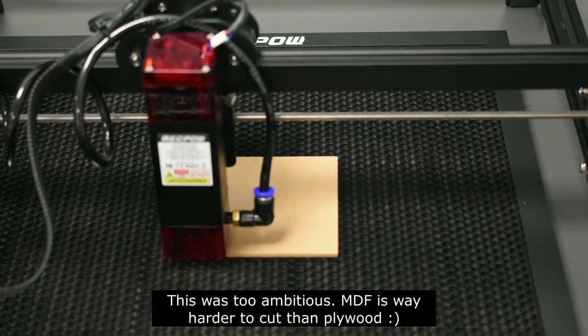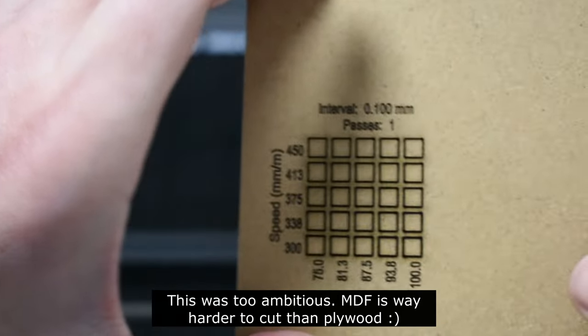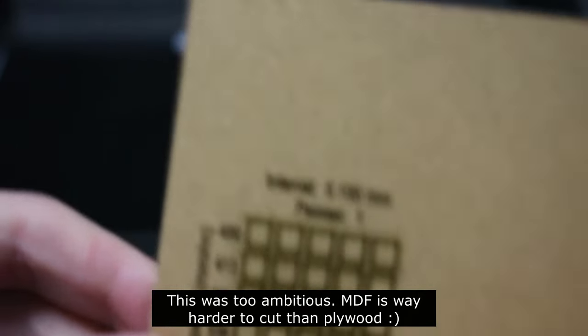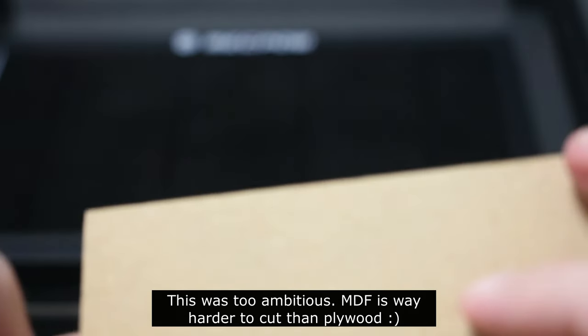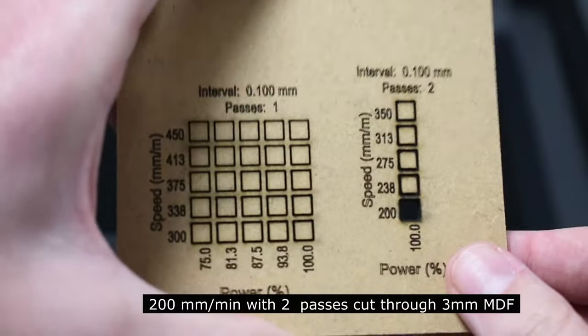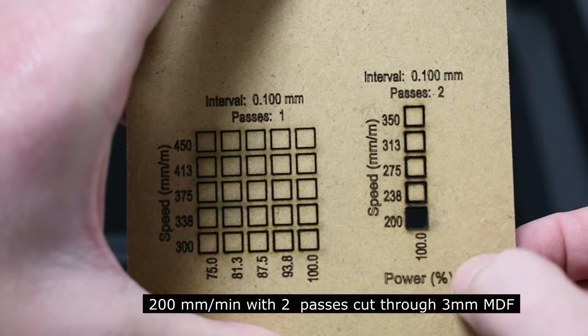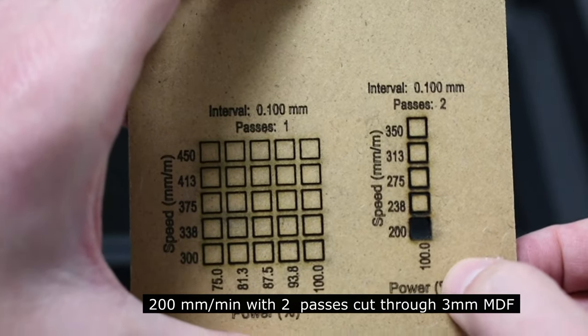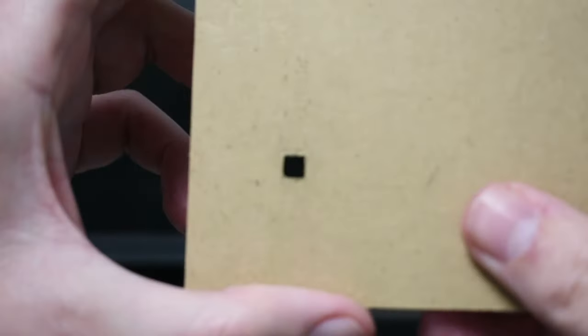So I will try to cut the MDF from 300 to 450 mm and from 75 to 100%. So it did not cut through at all on these bits. Let's try to go slower then. So as you can see 200 mm per minute on 100% cut through nicely. So let's do some engraving.